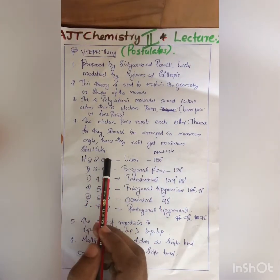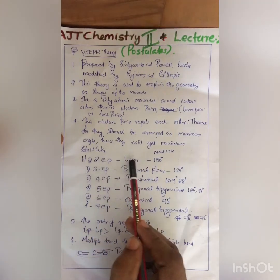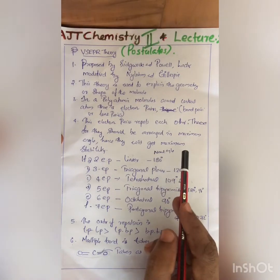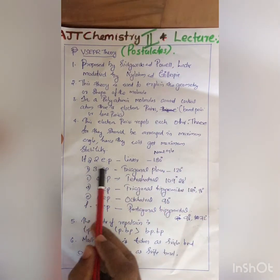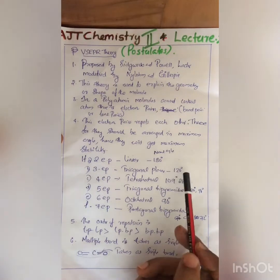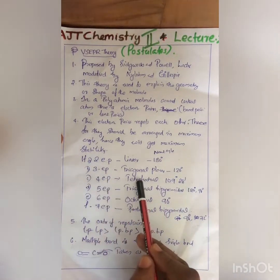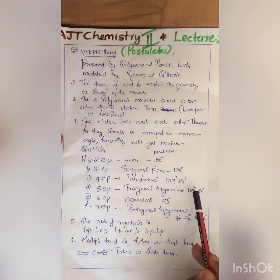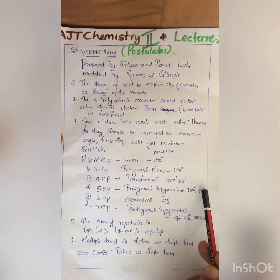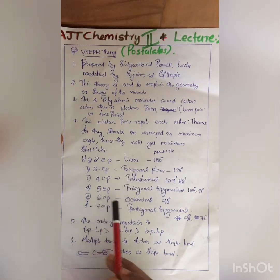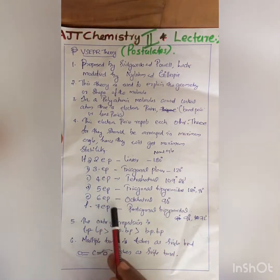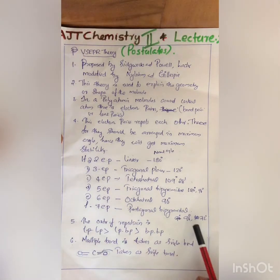The expected arrangement and shape: if there are two electron pairs, the expected shape is linear with a bond angle of 180 degrees, though in some cases it may deviate. Three electron pairs give trigonal planar with 120 degrees. Four electron pairs give tetrahedral at 109 degrees 28 minutes. Five electron pairs give trigonal bipyramidal with angles of 120 and 90 degrees. Six electron pairs give octahedral at 90 degrees. Seven electron pairs give pentagonal bipyramidal with angles of 90 and 72 degrees.